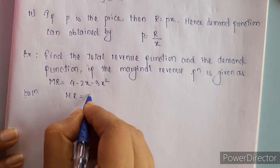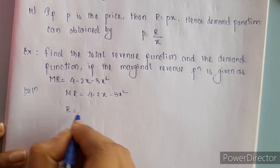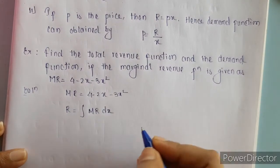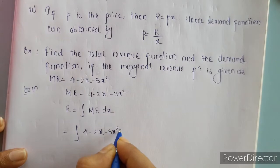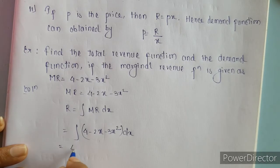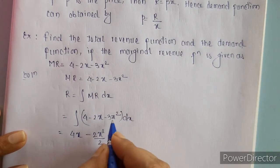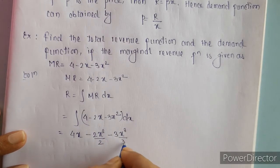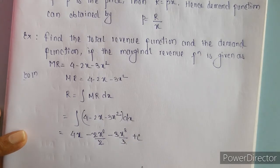Given marginal revenue is 4 minus 2X minus 3X squared. We know that revenue is nothing but the integral of marginal revenue with respect to X. So this is the integral of 4 minus 2X minus 3X squared. That gives us 4X minus 2 times X squared over 2 minus 3 times X cubed over 3 plus constant. The 2s cancel and the 3s cancel.